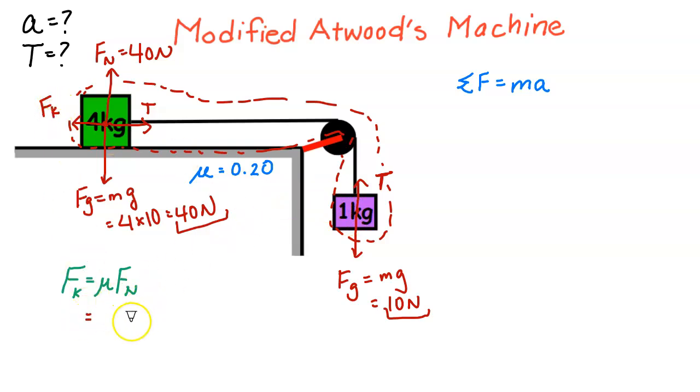I know coefficient of friction is 0.2. The normal force is 40. And 0.2 times 40, I get 8 newtons.